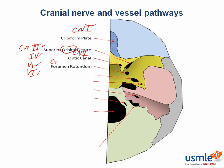Cranial nerve V2 passes through the foramen rotundum — rotund meaning round — and cranial nerve V3 passes through the foramen ovale, which is more oval shaped.